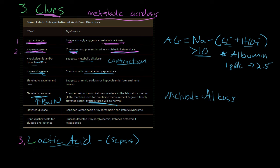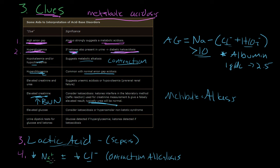Checking a lactic acid value is also helpful. An elevated lactic acid, usually from a process such as sepsis, coincides with metabolic acidosis. I like looking at your sodium and chloride values in your chemistry, because a low sodium with or without a low chloride is usually part of a contraction alkalosis or metabolic alkalosis from low volume. An elevated creatinine with an elevated BUN is very common in renal failure. You can also take other elements from your history — for example, a patient with diarrhea might explain why they're having a non-anion gap metabolic acidosis.